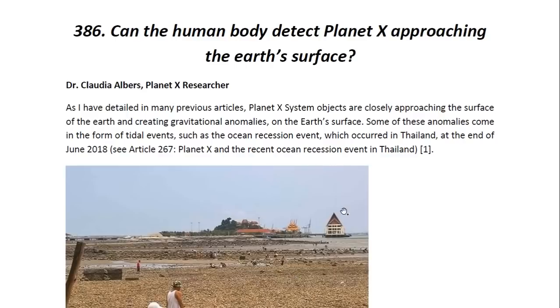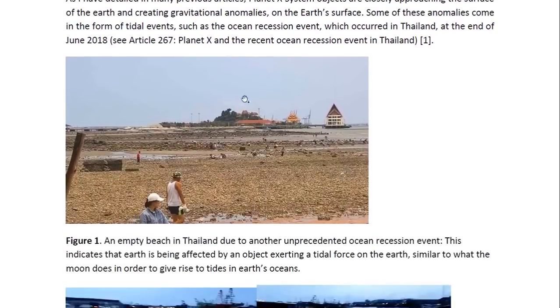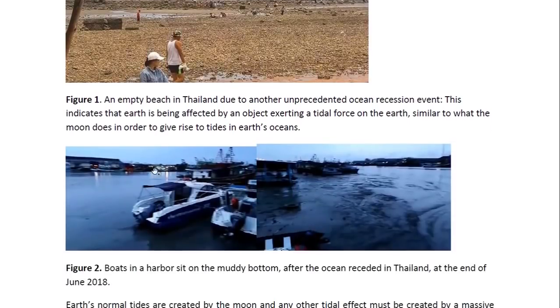As I have detailed in many previous articles, Planet X system objects are closely approaching the surface of the Earth and creating gravitational anomalies on the Earth's surface. Some of these anomalies come in the form of tidal events such as the ocean recession event which occurred in Thailand at the end of June 2018. You may look at Article 267, Planet X and the Recent Ocean Recession Event in Thailand for more details. And here's a photograph of that event. As you can see, a beach emptied of water, an unprecedented event. And this is the harbor. You can see the boat sitting on the mud, and this had never happened before.